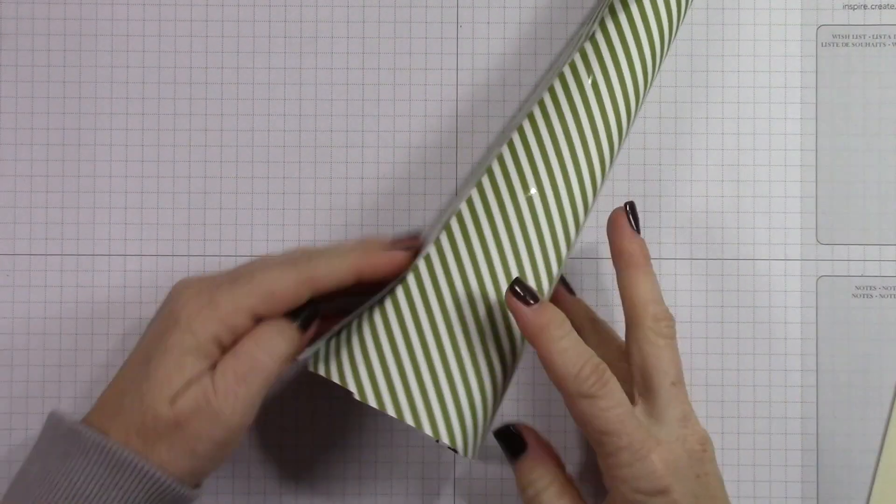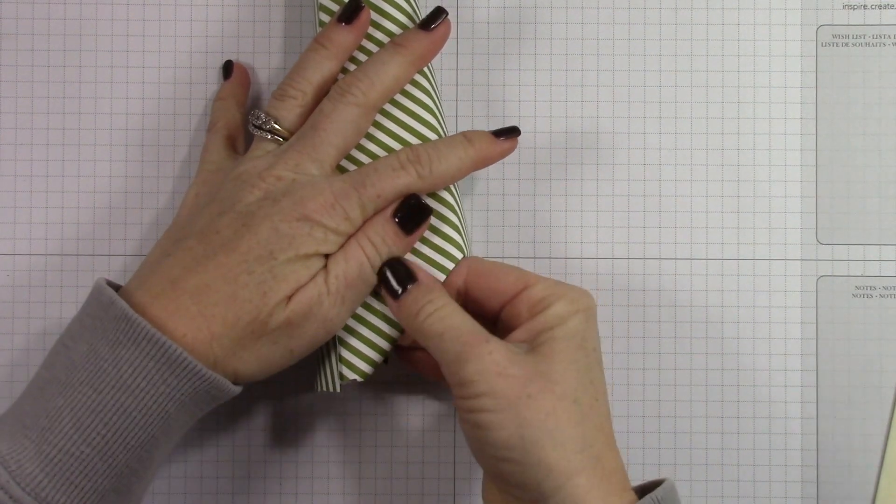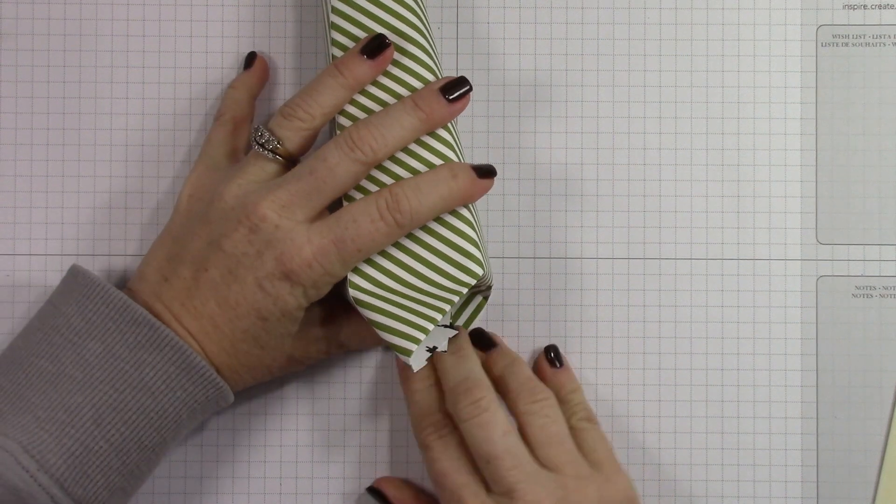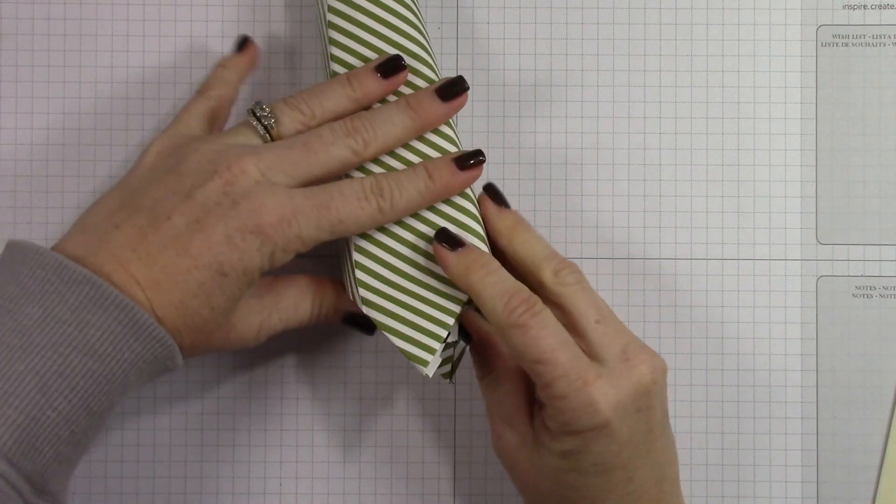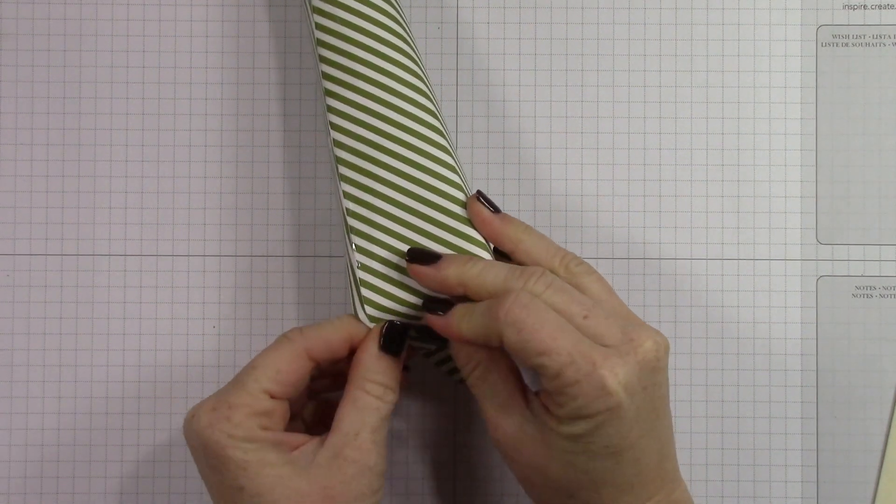Alright, so I've trimmed off the end and I'm just going to fold two sides in. The trick I find with wrapping is if you fold the sides in first and then you give a good crease, then you can fold the tops down and the bottoms up and it has a really nice fold at the bottom.